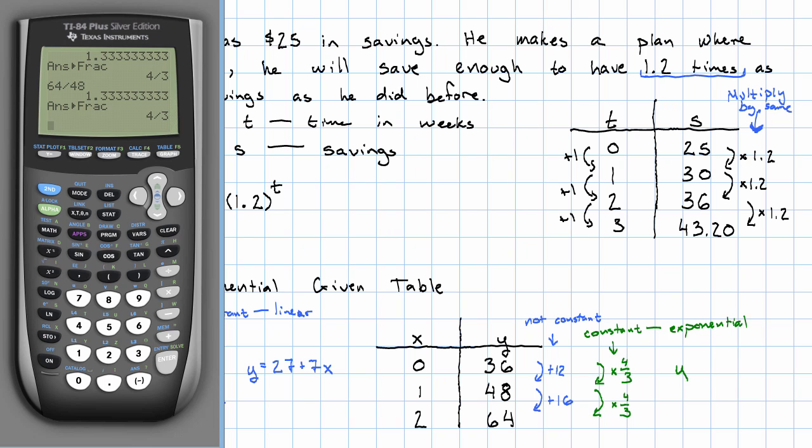What's our equation? Y equals the starting amount 36 times the multiplier 4 thirds to the x power. Just to make sure that really worked, 36 times 4 thirds to the second power really does give me 64.